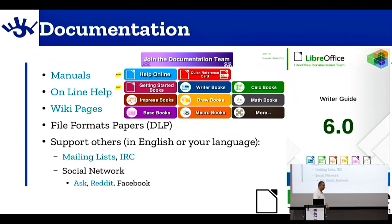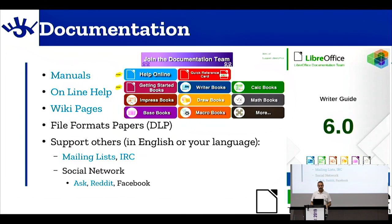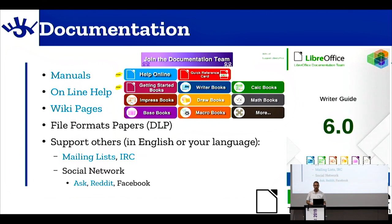Another area to collaborate in is documentation. Documentation means manuals — just the Writer manual alone is over 500 pages. Then you also have Calc, Impress, Draw, and Base. There are also online help pages, wiki pages, file format papers for the Document Liberation Project, and support — replying to emails on the mailing list, IRC channels, social networks, the Ask website, Reddit, and Facebook. This is also perfect for shy people who prefer working behind their keyboard.